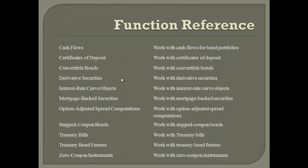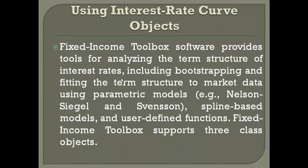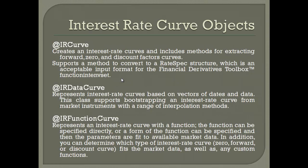The fixed income toolbox functions cover convertible bonds, derivative securities, interest rate objects, mortgage backed securities, option adjusted spread computation, step coupon bonds, treasury bills, treasury bond futures, and zero coupon instruments. The toolbox provides tools for analyzing the term structure of interest rates including bootstrapping, fitting the term structure to market data using parametric models such as Nelson-Siegel and Svensson spline-based models. Interest rate paths are the most important elements — we assign weights to all paths, compute values for each, and take an average.